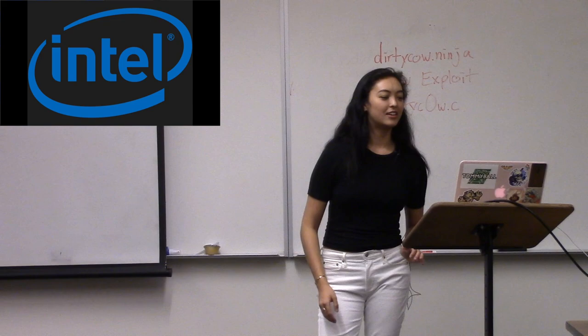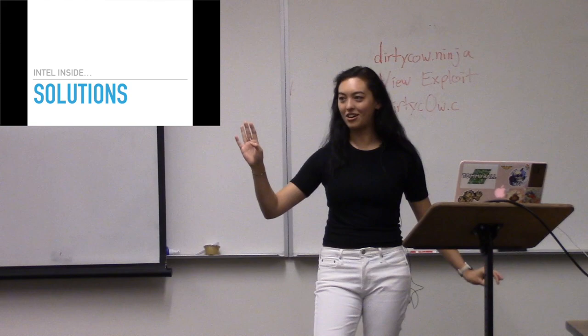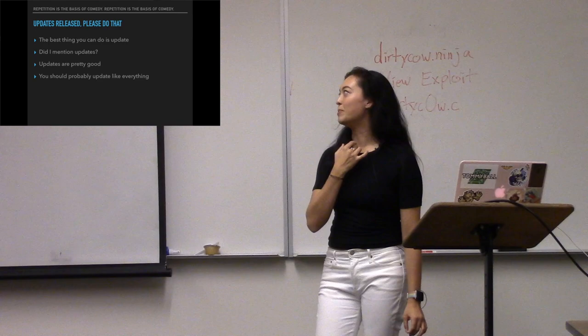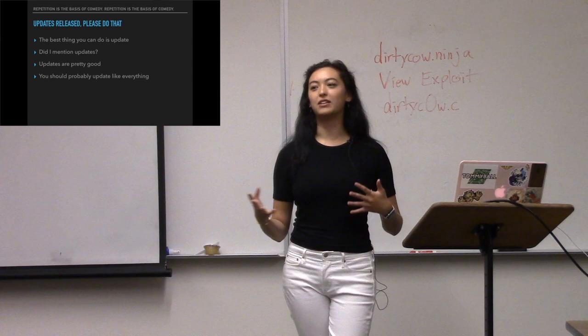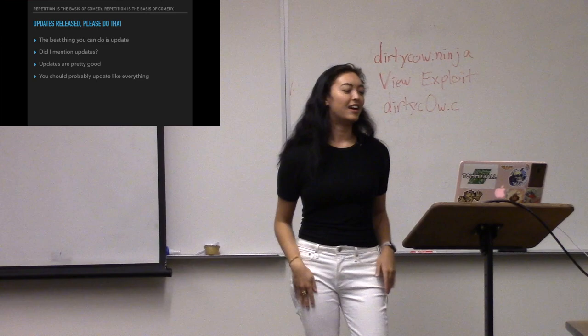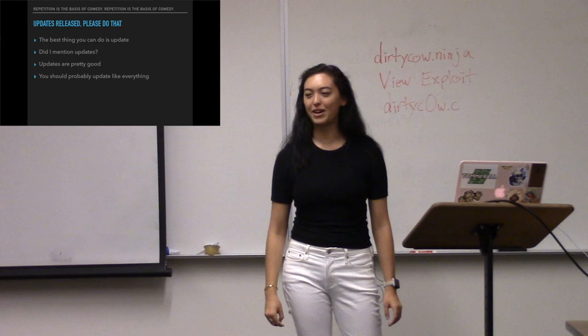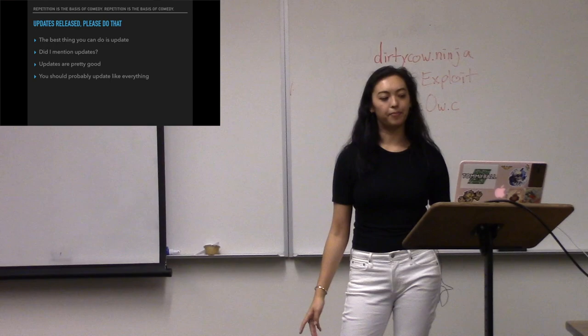What are some solutions for Spectre, Meltdown, and Foreshadow? First of all, one solution would be to update all your things. Updating stuff is probably one of the best ways to keep everything up to date and mitigate security concerns. If you've ever read security notes for updates, you might see things like 'core crypto is broken' — that's probably bad and you should definitely update. Just update your stuff. It's literally the best possible solution. No matter who you are, keep everything up to date all the time.